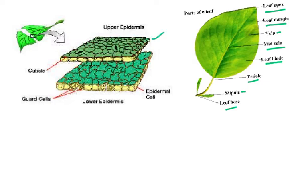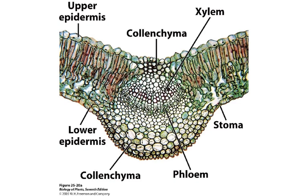There is an upper epidermis and a lower epidermis. Some leaves have stomata in both, and we can also see the guard cells. On top is the cuticle. There is also a micrograph diagram showing how the leaf looks under the microscope — this is called a photomicrograph.